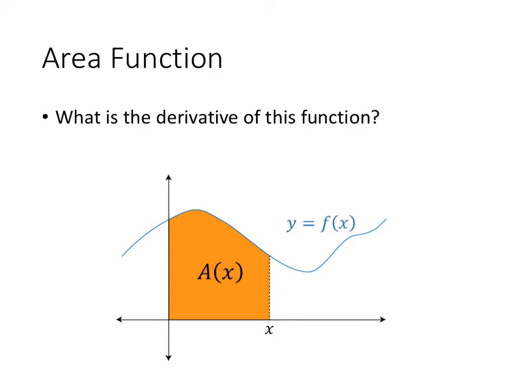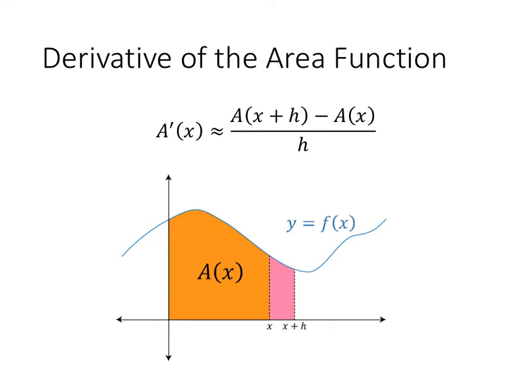So what's the derivative of that area function? What's the derivative of capital A of x? Well, if we think back to the definition of the derivative that we had way back when, before we learned all the derivative rules and shortcuts, A prime of x is approximately equal to A of x plus h minus A of x divided by h. And we can make that approximately equal sign, we can make that an equal sign by taking the limit as h goes to 0. Another way of thinking about that is that this approximation gets better the smaller h is. So if h is really, really small, that is a very good approximation to this derivative.